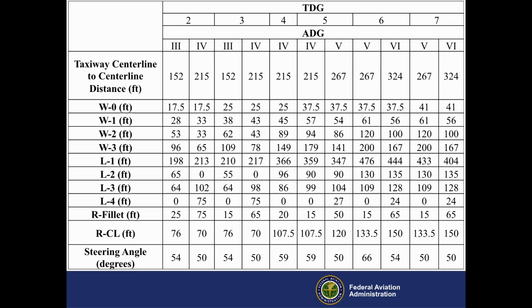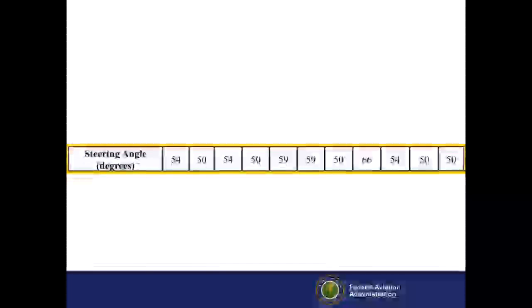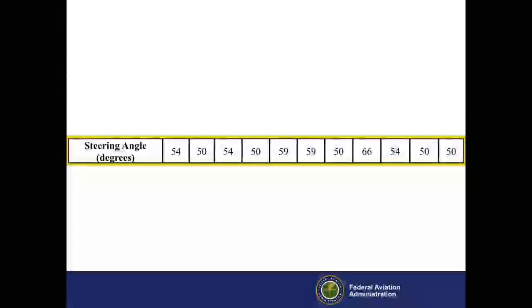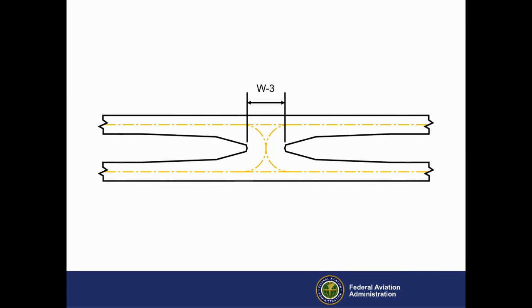Finally, note that for existing construction there are several combinations of TDG and ADG for which the maximum steering angle will exceed the standard 50 degrees. As we noted earlier, W3 is the width of the crossing taxiway. For higher TDGs, W3 can be wider than the runway, placing signs far from the pilot's eye. For this reason, it is important to coordinate the design of the taxiway system with the local air traffic control tower. If the airport does not require the capability of reverse turns, design the crossing taxiway accordingly.